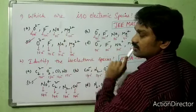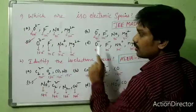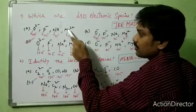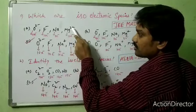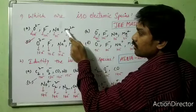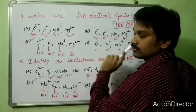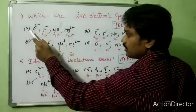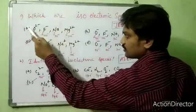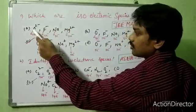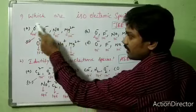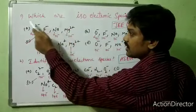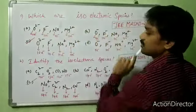Magnesium 2 plus: 12 protons, losing 2 electrons, so 12 minus 2 equals 10 electrons. In this species there is no similarity — they don't all have the same number of electrons. So option A is not an isoelectronic species.